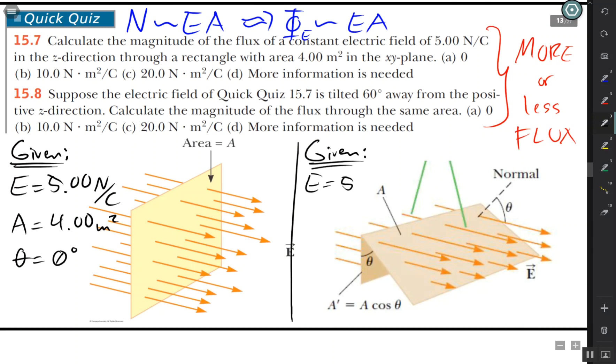For the second one, same electric field strength, same area, but now the angle, which is over here, is actually 60 degrees.